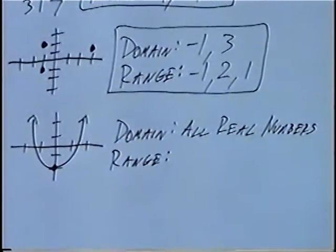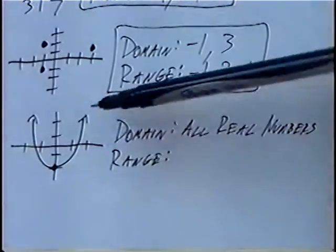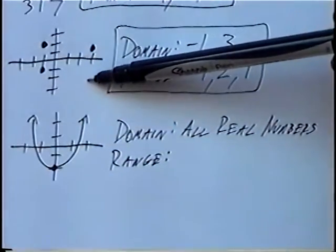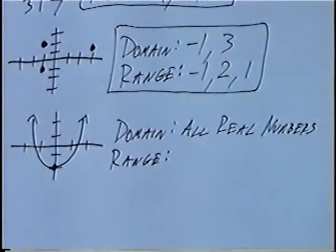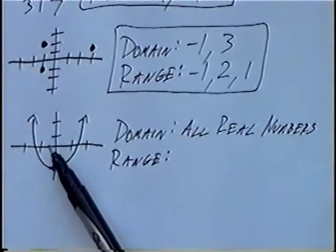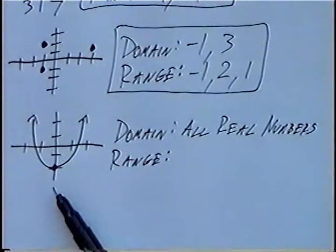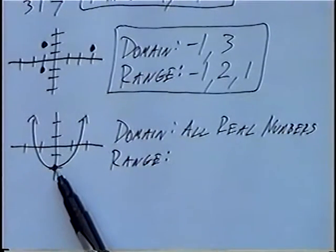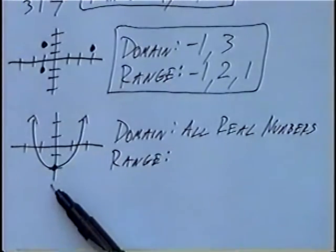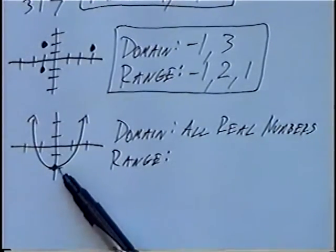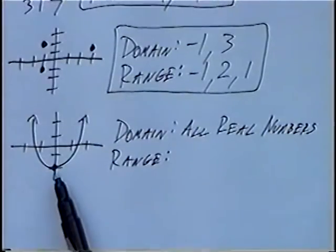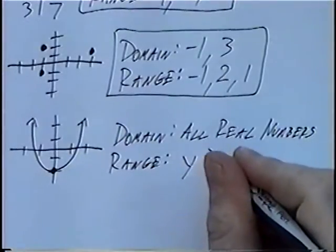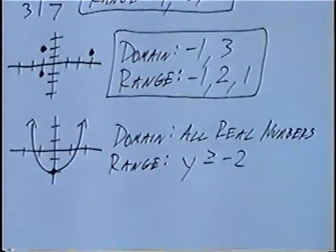For the range, if we look at the Y-values, every positive Y-value is on the graph — if the graph continues up high enough, any positive Y-value can be found. For negative Y-values, the lowest point would be the vertex of this parabola at Y-value of negative 2. There are no numbers less than negative 2 on this graph. So the range has to be negative 2 or bigger, or Y has to be greater than or equal to negative 2.